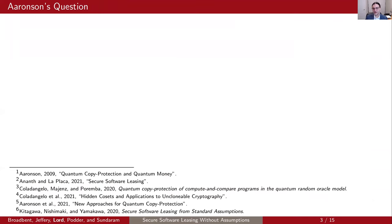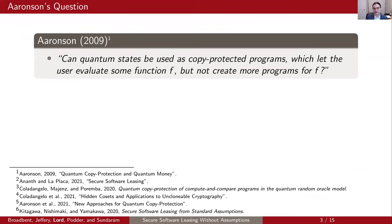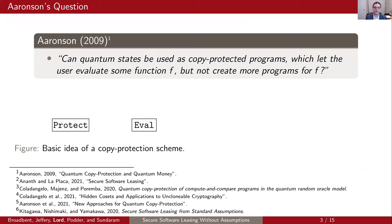So where does the story of unclonable functionalities begin? It begins with a question by Scott Aaronson in 2009. This question is quite simple: can quantum states be used as copy-protected programs, which let the user evaluate some function f, but not create more programs for f? The basic idea behind copy protection is that we have a pair of procedures, protect and eval, such that we feed some function f taken from a larger family into the protection procedure. This yields some quantum state rho_f, and rho_f can be used in the evaluation procedure with an input x to produce the output f(x).